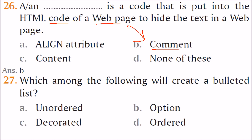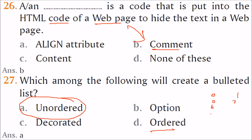Which of the following will create a bulleted list? The answer is unordered list (UL), because unordered lists give you bullets. Ordered lists give you numbers, and the other two options are not valid.